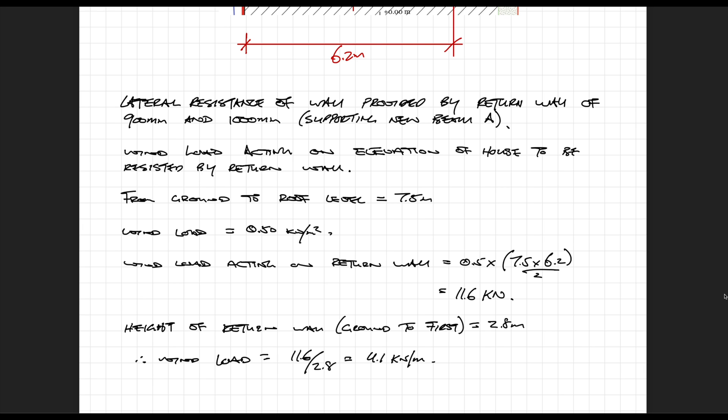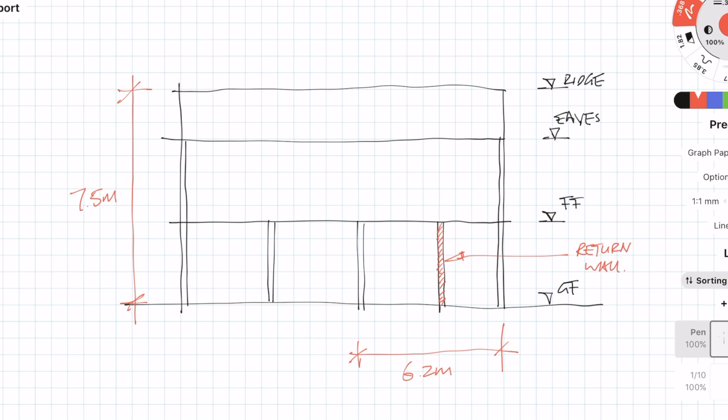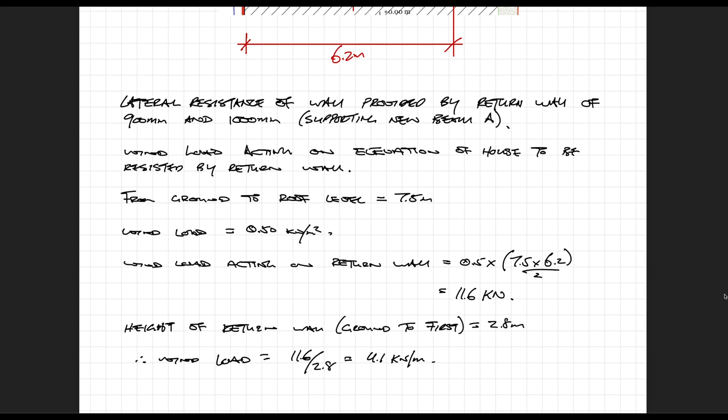I'm choosing a wind load of 0.5 kN per m² because the location of this house is within an area which is fairly sheltered, so the wind loads aren't going to be that high. The wind load you use will vary between locations, and if you're in a place very susceptible to high winds such as an open area or on a hill, the wind loads might be significantly higher, which you'll need to check separately. I'm calculating the area or tributary area of the elevation where the return wall is going to be resisting that force. Once I've got the area I multiply by the wind load to get a force in kN, then divide by the height of the wall and end up with a linear wind load of 4.1 kN per m.